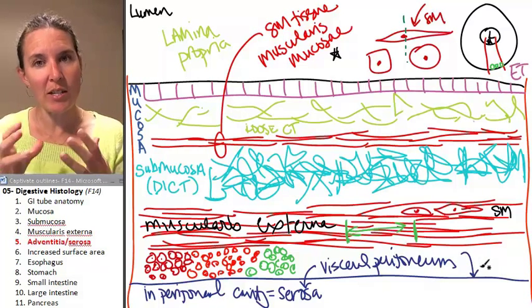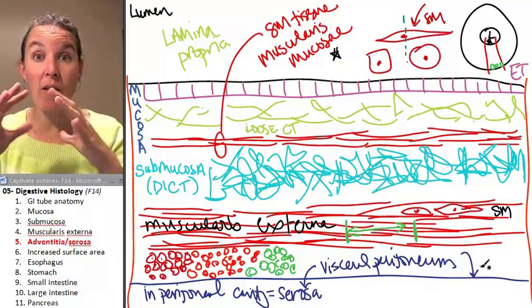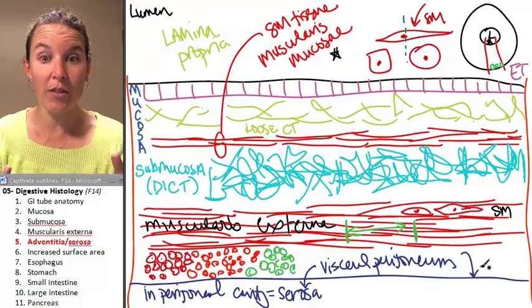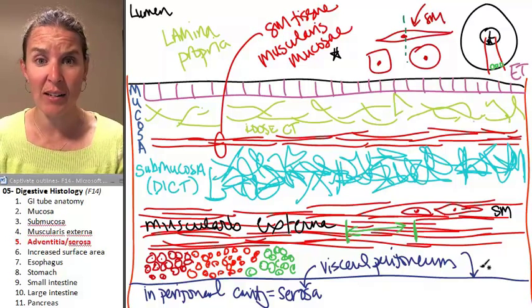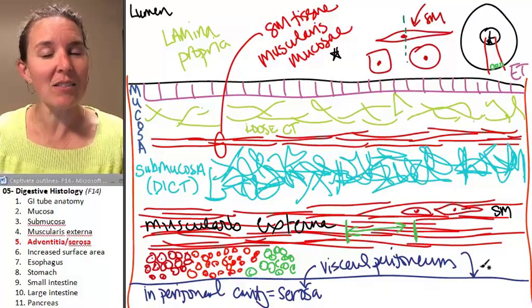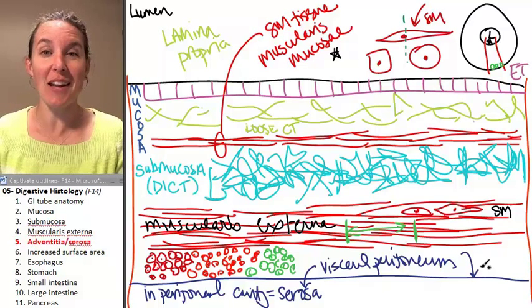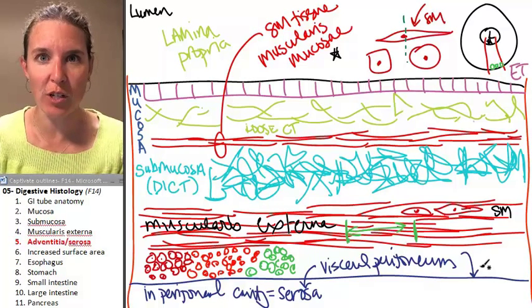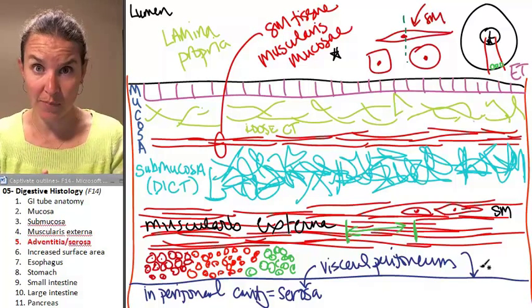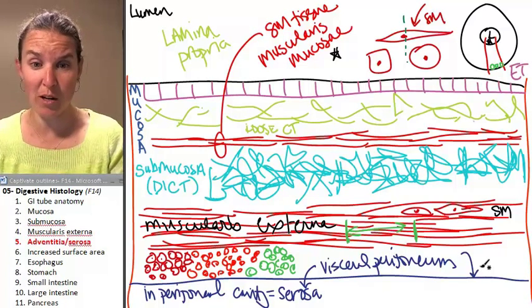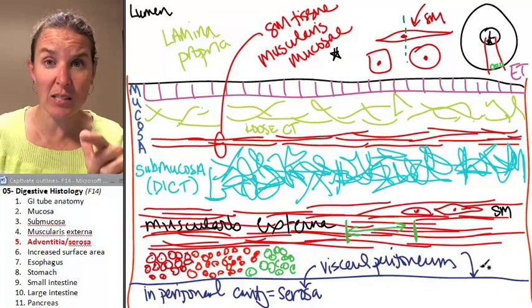Because remember in the peritoneal cavity, remember how we covered our organs with the visceral peritoneum? It's just a serous membrane. Why do we have to call it something else? Because this is human anatomy and you don't have enough structures to learn. So it is called the serosa. It is visceral peritoneum because it's in the peritoneal cavity.